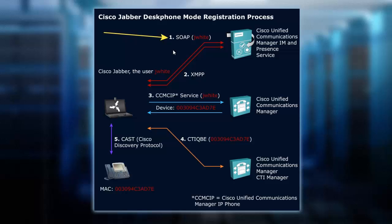Once we've done that, we use our XMPP protocol and the client registers to get presence information from Communications Manager. We're moving down the chain and pulling out some services. Based on the IP phone profile that the Jabber client initially downloaded, the client then receives the list of endpoint devices that it's going to manage.